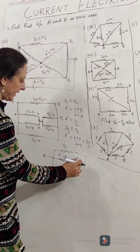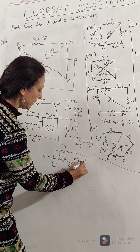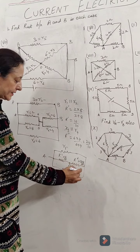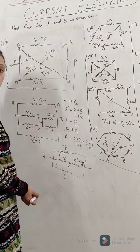And this R double dash is 24 by 10. So this 16 by 10 and 24 by 10, they are in series. So the result comes out to be 4 ohm.